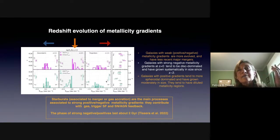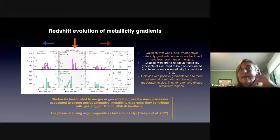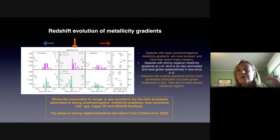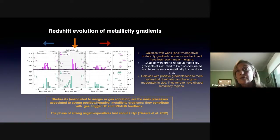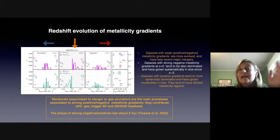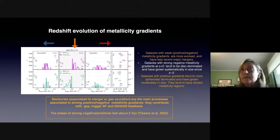The trends are statistically significant. We can associate the impact of mergers or gas accretions as mechanisms that shape the metallicity gradients as strong positive or strong negative. We can also estimate from this analysis that the phase of strong negative or strong positive gradient lasts about two gigayears, and then the galaxy evolves or converges to a weak metallicity gradient.